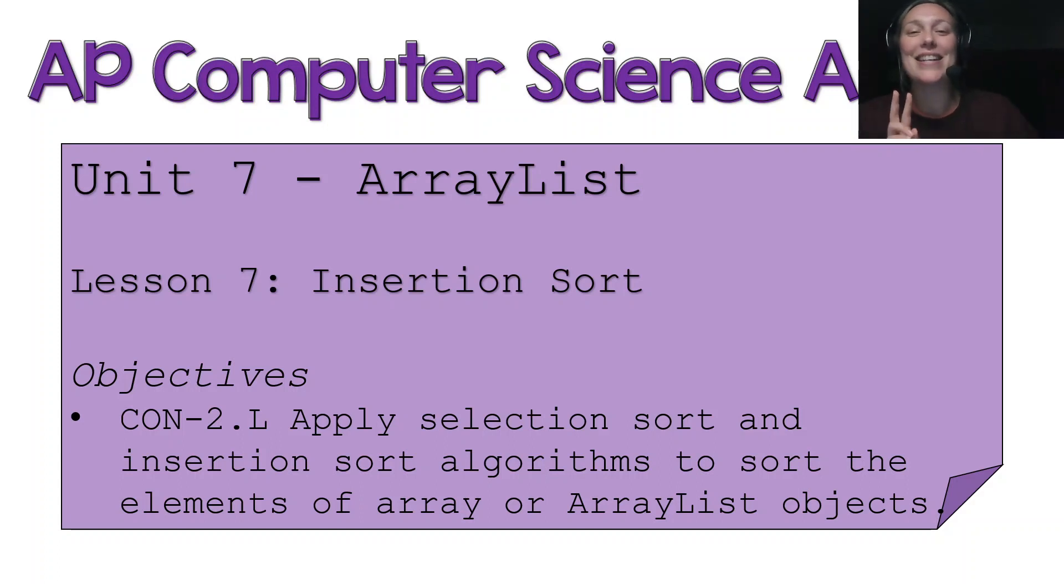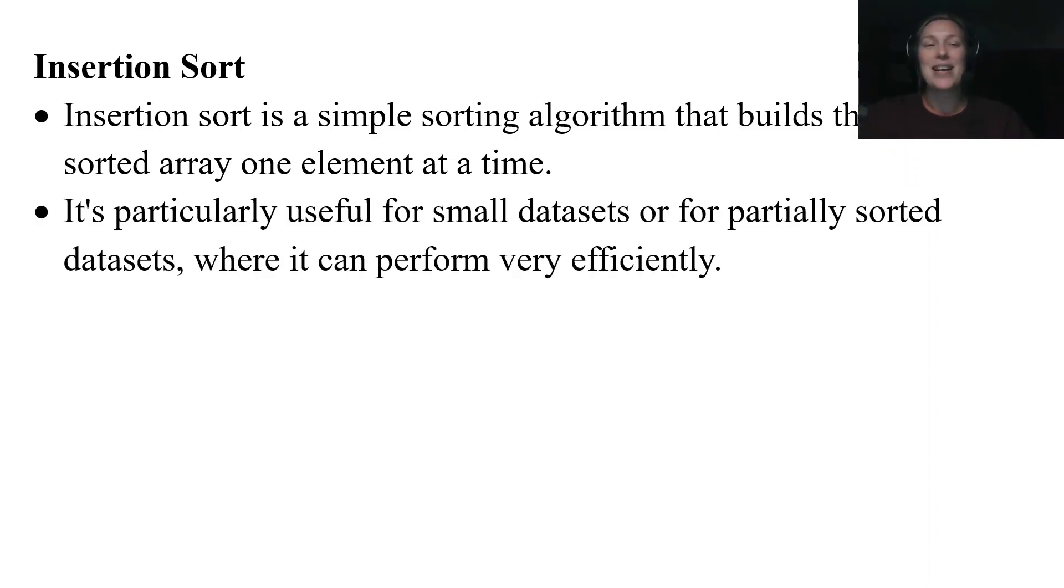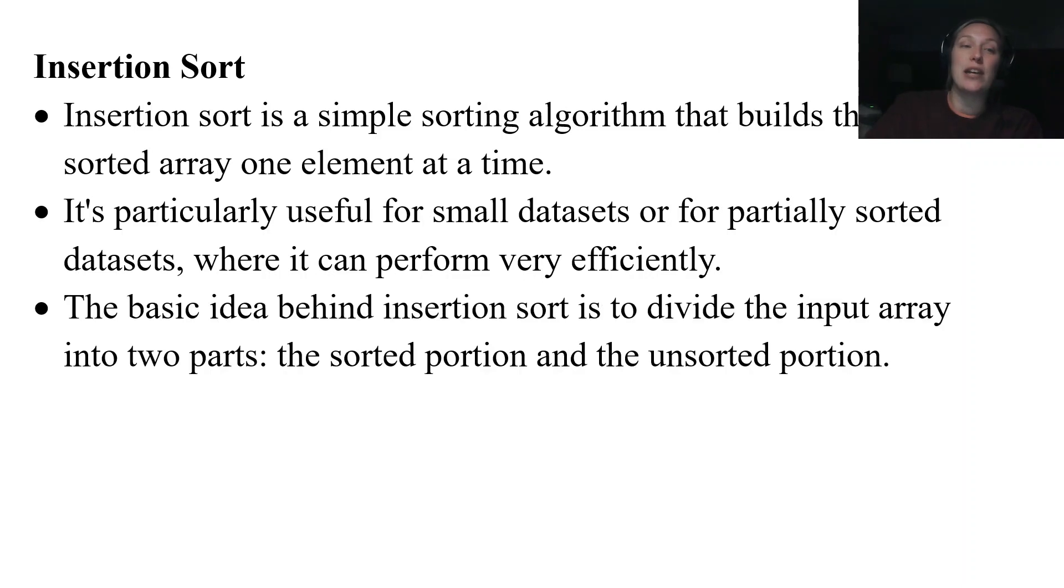So we're gonna go over our second sorting algorithm today. It's a simple sorting algorithm, kind of like our selection sort as well, that builds the final sorted array one element at a time. It's very useful for small data sets or data sets that are actually partially sorted already. It is very efficient in those scenarios.